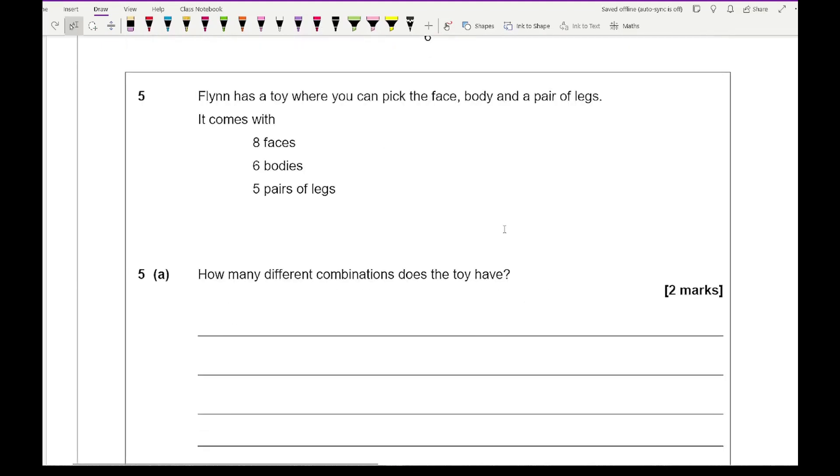Moving on to question 5, it says Flynn has a toy where you can pick a face, a body and a pair of legs. It comes with 8 faces, 6 bodies and 5 pairs of legs. How many different combinations does the toy have? So this is going to be multiplying the number of quantity of each genre. It's going to be 8 times 6 times 5, which gives me an answer of 240.